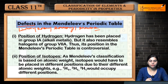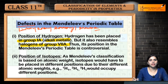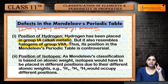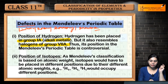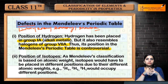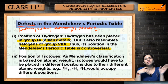The first defect is the position of hydrogen. Hydrogen has been placed in Group 1A with alkali metals, but it also resembles halogens of Group 7A. Therefore, the position of hydrogen in Mendeleev's periodic table is controversial and not justified — whether it belongs in Group 1A with alkali metals or in Group 7A with halogens.